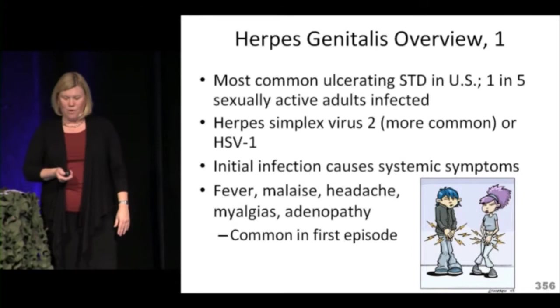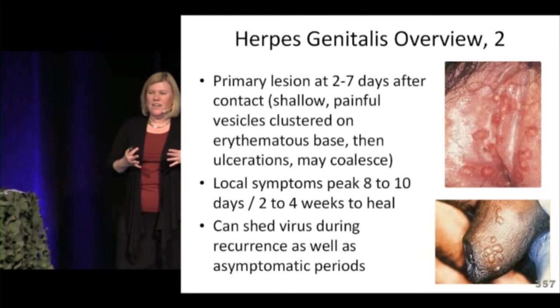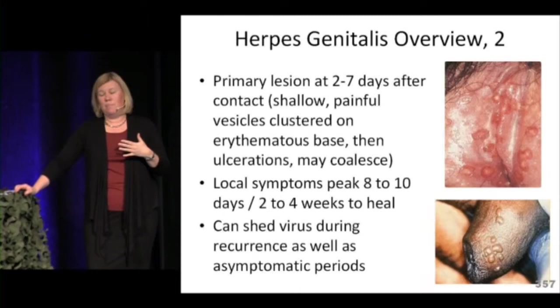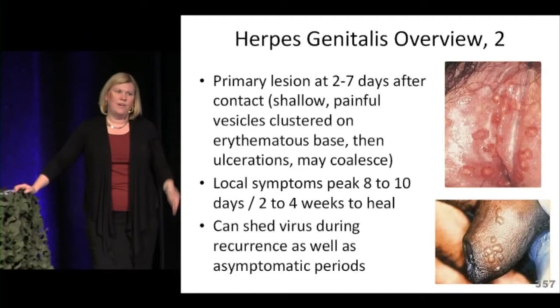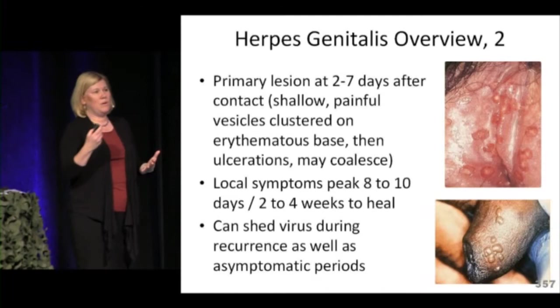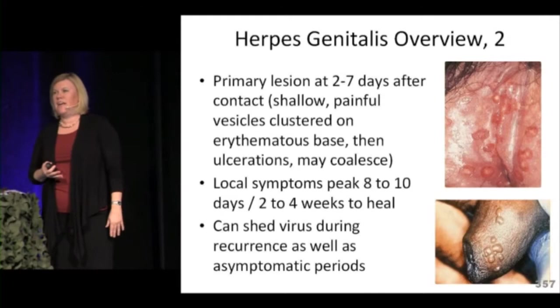The primary herpes lesion appears a few days after contact as a shallow, very painful vesicle clustered on an erythematous base, which then ulcerates. Lesions can coalesce and be quite impressive — sometimes single, sometimes multiple, and very painful. Local symptoms peak at about a week, and it takes a few weeks to fully heal. Viral shedding can occur at any time, including during recurrences or even asymptomatic periods, though shedding is less likely when asymptomatic.